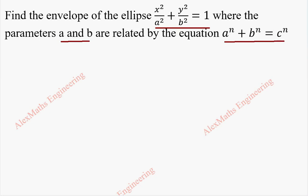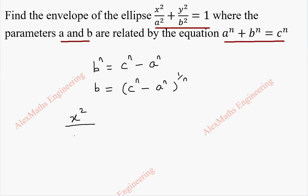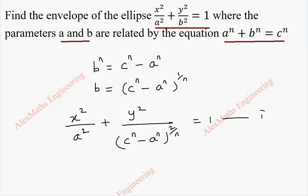As the first part, I am going to find the value of b power n, which is c power n minus a power n. So b will be (c power n minus a power n) whole power 1 by n. When I replace this in the ellipse equation, it is x squared by a squared plus y squared by (c power n minus a power n) whole power 2 by n, which is equal to 1. Let's keep this as our first equation.